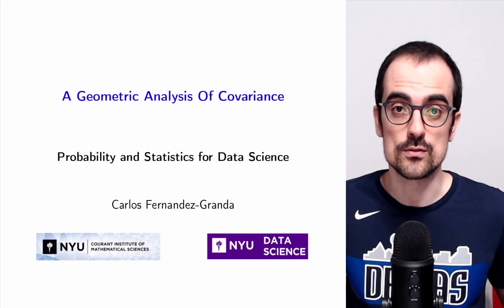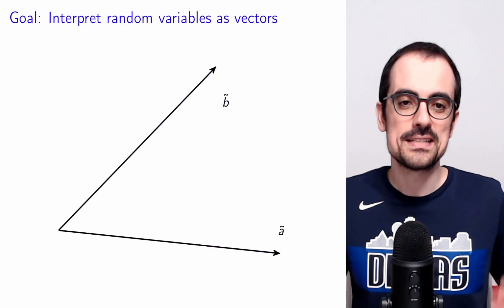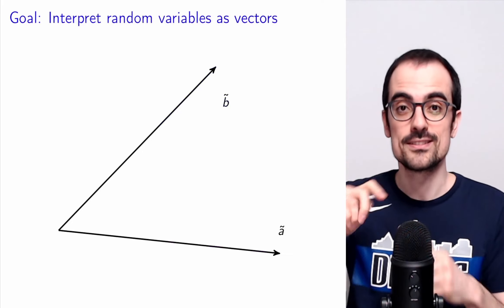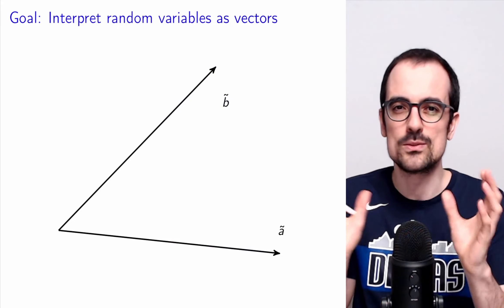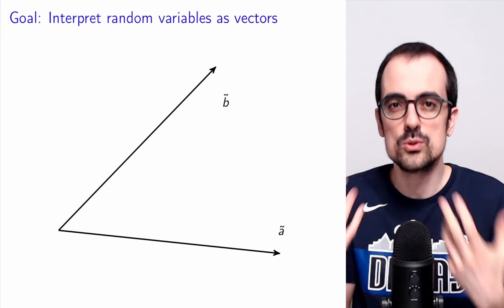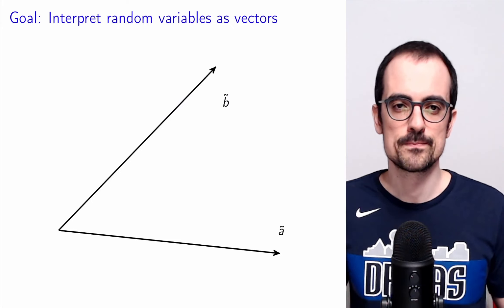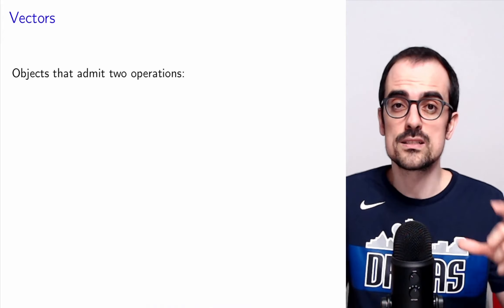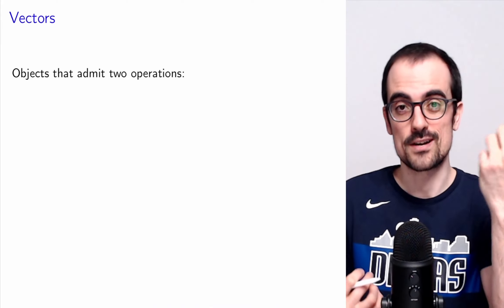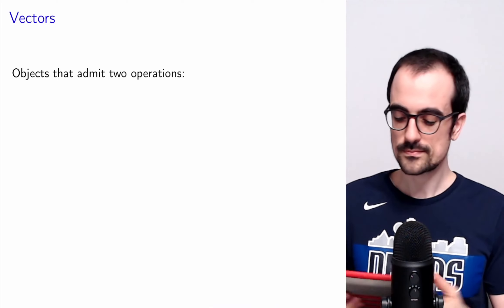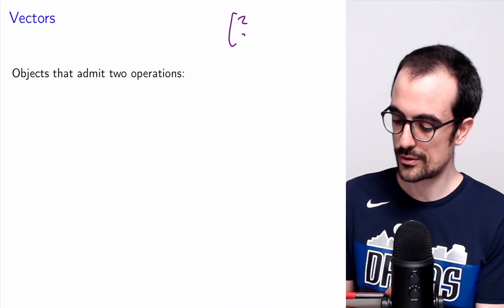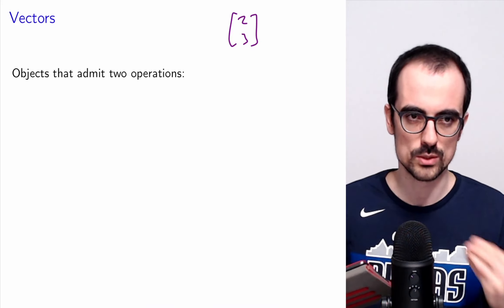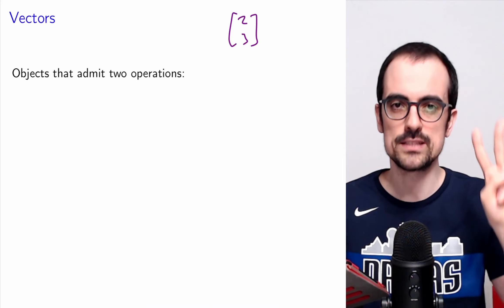We're going to provide a geometric analysis of covariance. The idea is that we're going to think of random variables as vectors that have a certain direction within a certain space, which sounds a little bit weird the first time you hear about it, but it's very useful to build intuition about correlation. Let's remember what a vector actually is mathematically. We often think of vectors as just a list of numbers — those are vectors in a Euclidean space. For example, the vector (2, 3) is a vector in R². But what do we actually mean when we say a vector in mathematics? We mean objects that admit two operations.